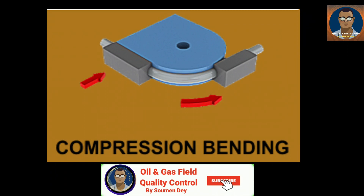There are many advantages to compression bending that both manufacturers and end users can benefit from. The method is fairly simple and does not require many complex tooling parts, and it is capable of achieving precision contours and bends with ease. However, there are some disadvantages: because of its simplicity, it is not able to achieve complex formations, and the lead time also takes too long, making it almost impractical in some cases.